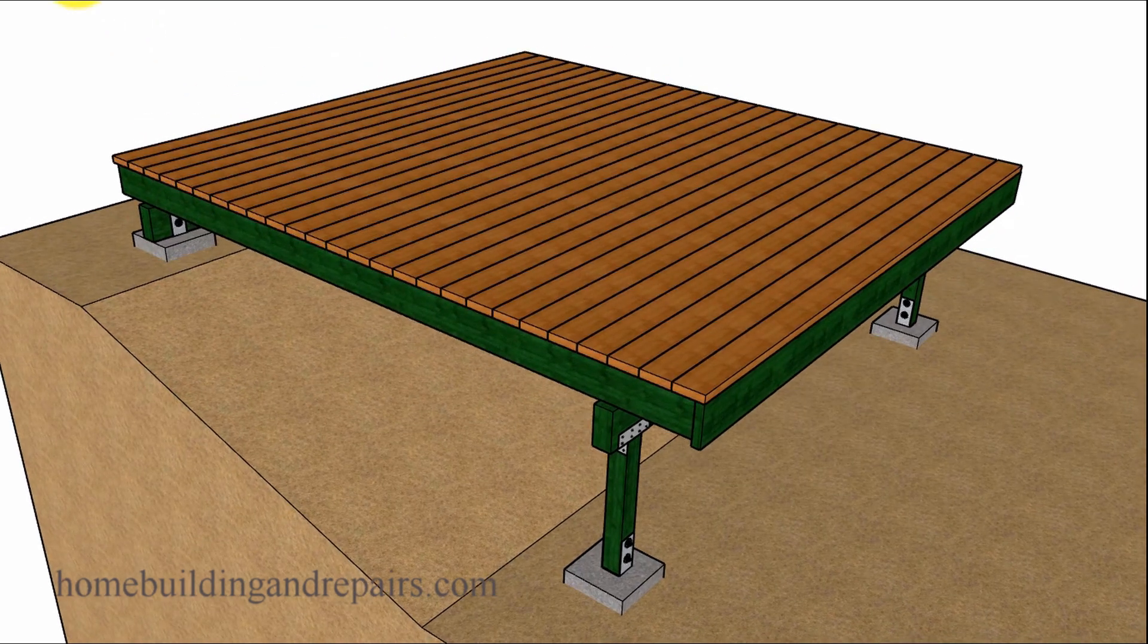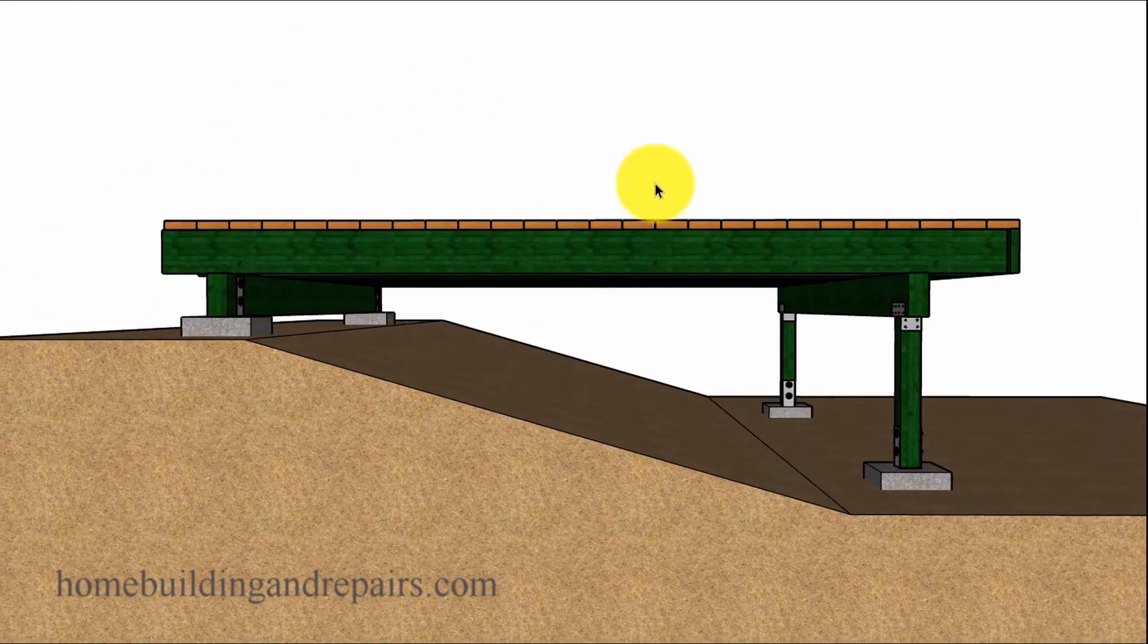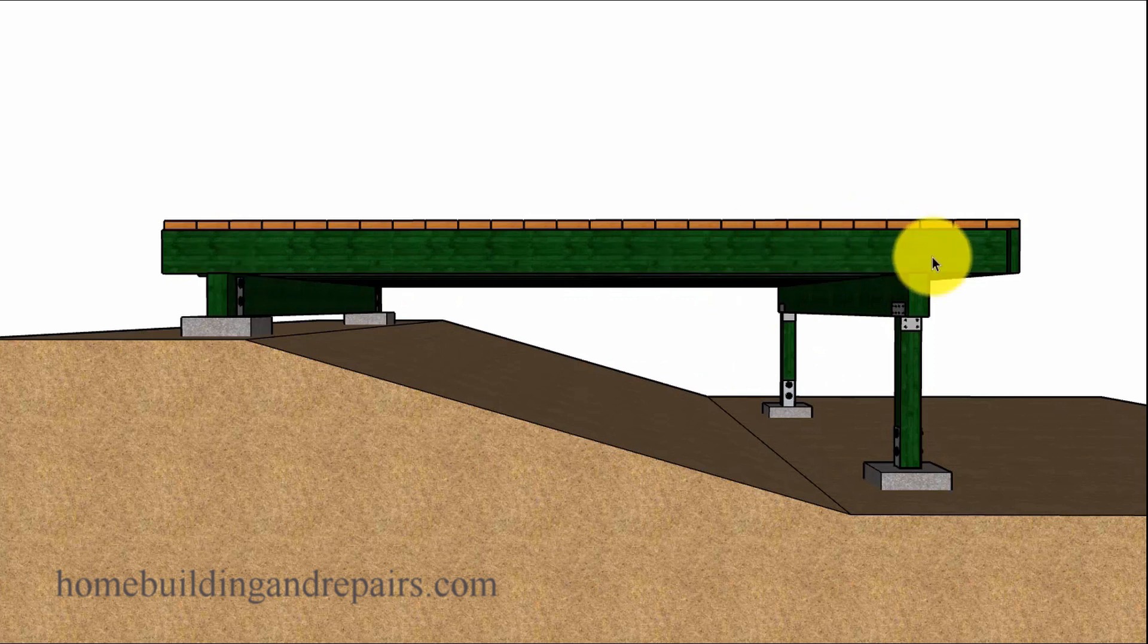First thing I want to point out is that a deck like this might only require bracing in the front. You might not need to have any bracing on the side coming up here, and the reason for that would be if you have a large enough concrete footing here on each side, or you have multiple footings, then this right here is going to provide you with a nice anchor into the ground to prevent this from moving in this direction.